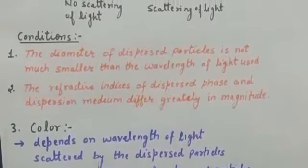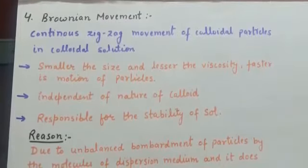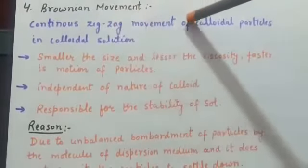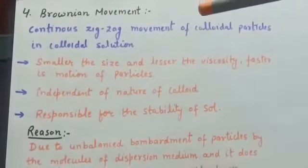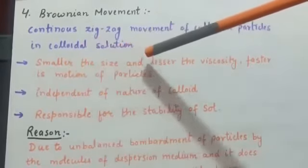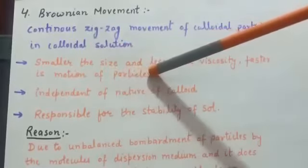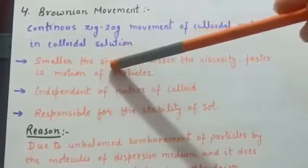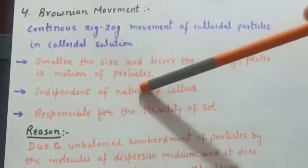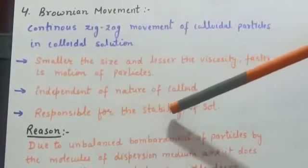The next property is Brownian motion. When a colloidal solution is viewed under a powerful ultramicroscope, the colloidal particles appear to be in a state of continuous zigzag motion — this is known as Brownian motion. This motion depends on the size of the particle and the viscosity of the medium: smaller size and lesser viscosity result in faster motion. Brownian motion is independent of the nature of the colloid.